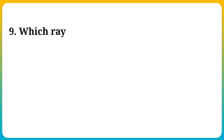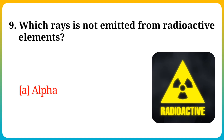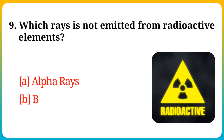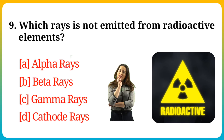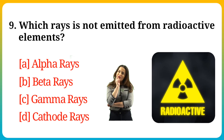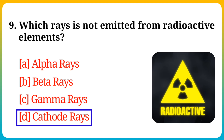Question number 9. Which ray is not emitted from radioactive elements? Option A: Alpha rays, B: Beta rays, C: Gamma rays, D: Cathode rays. Answer is option D: Cathode rays.